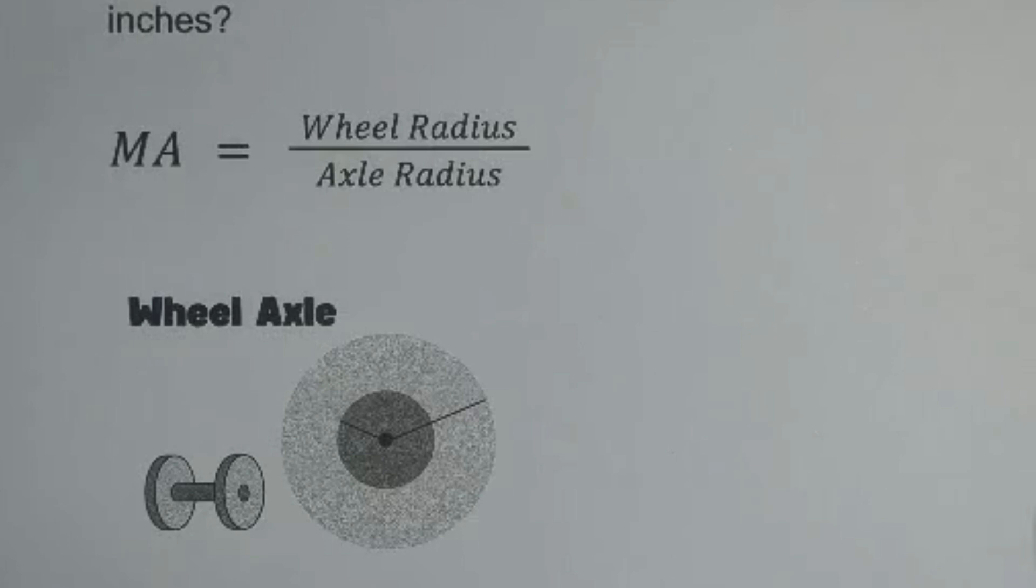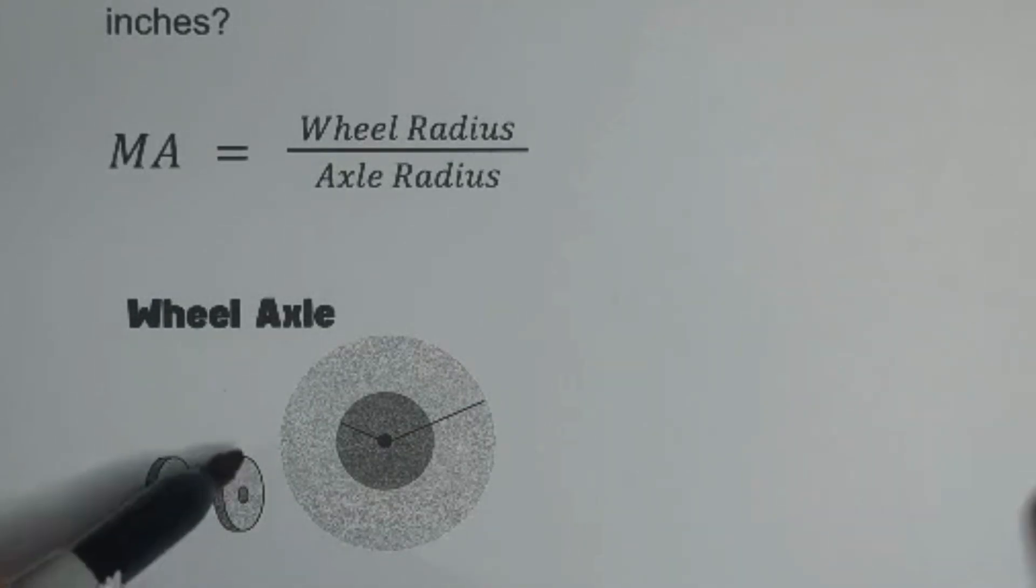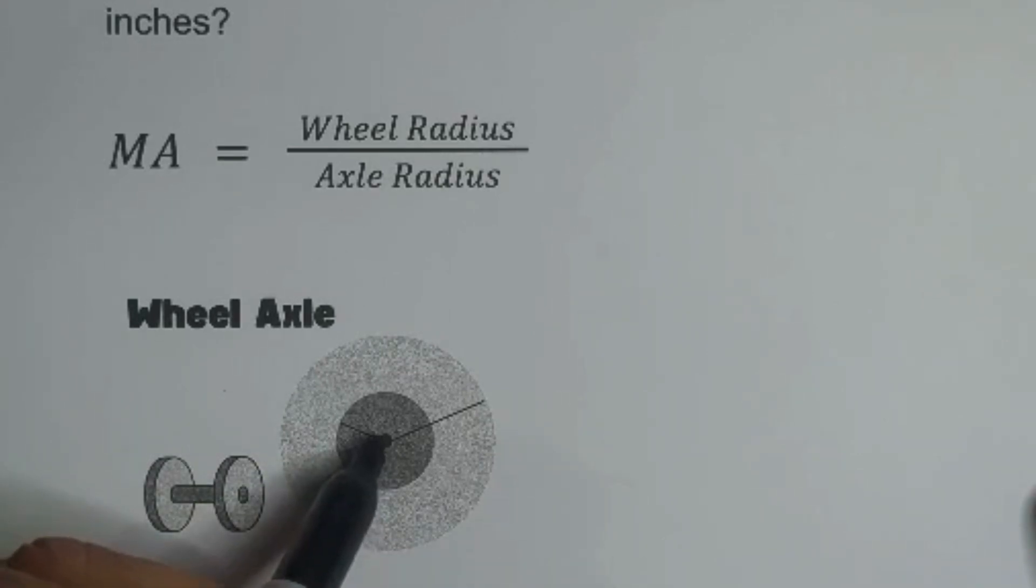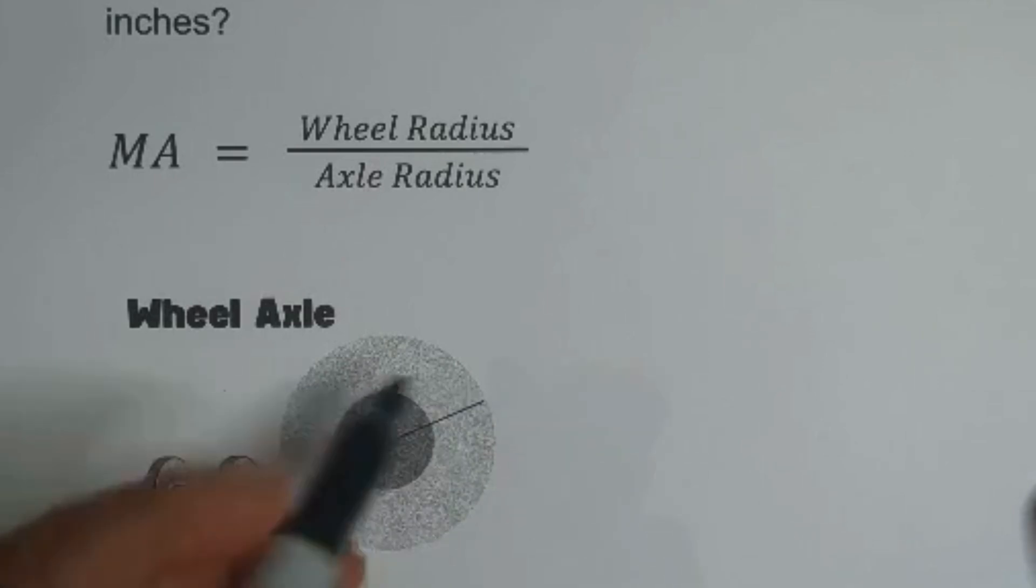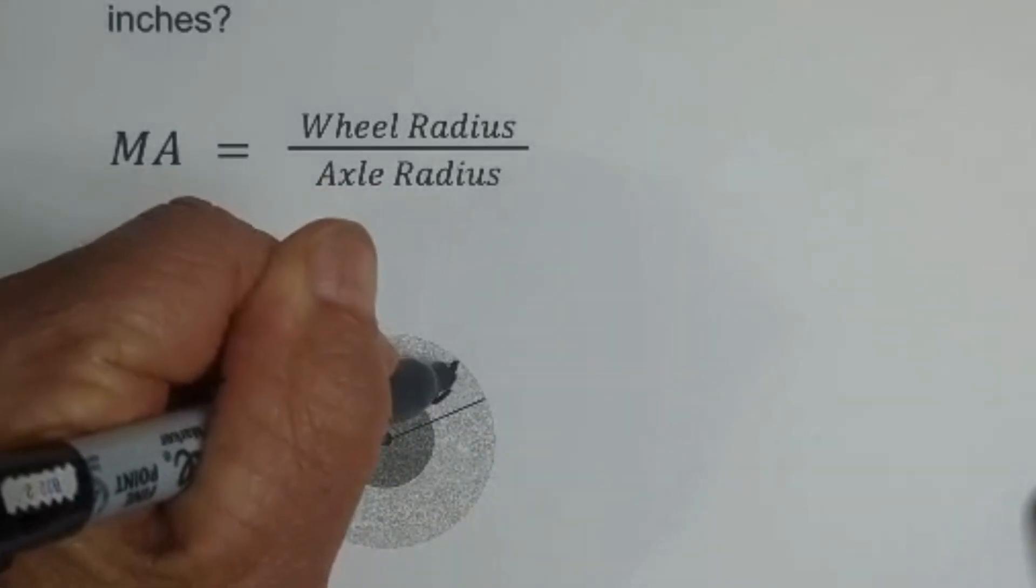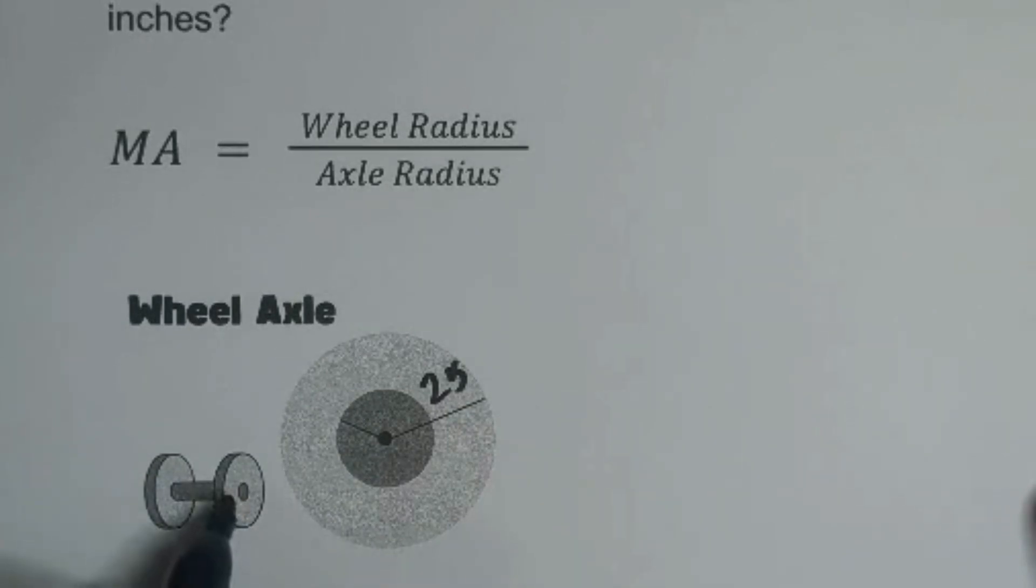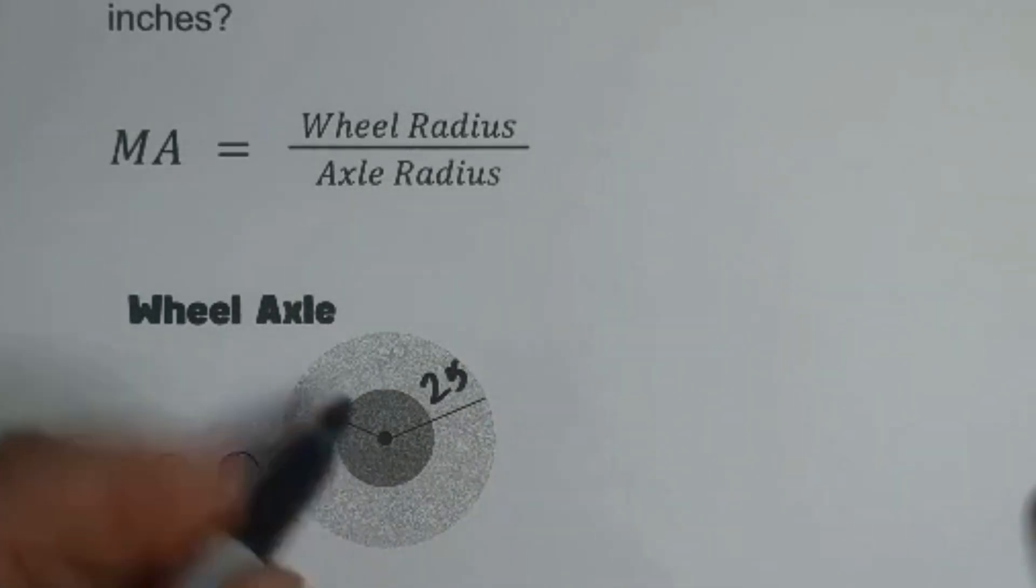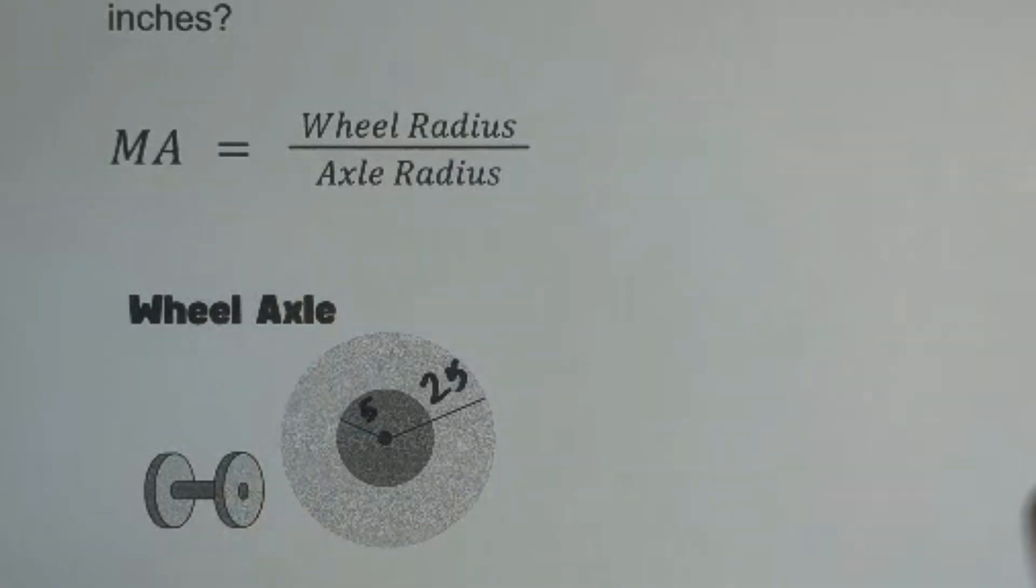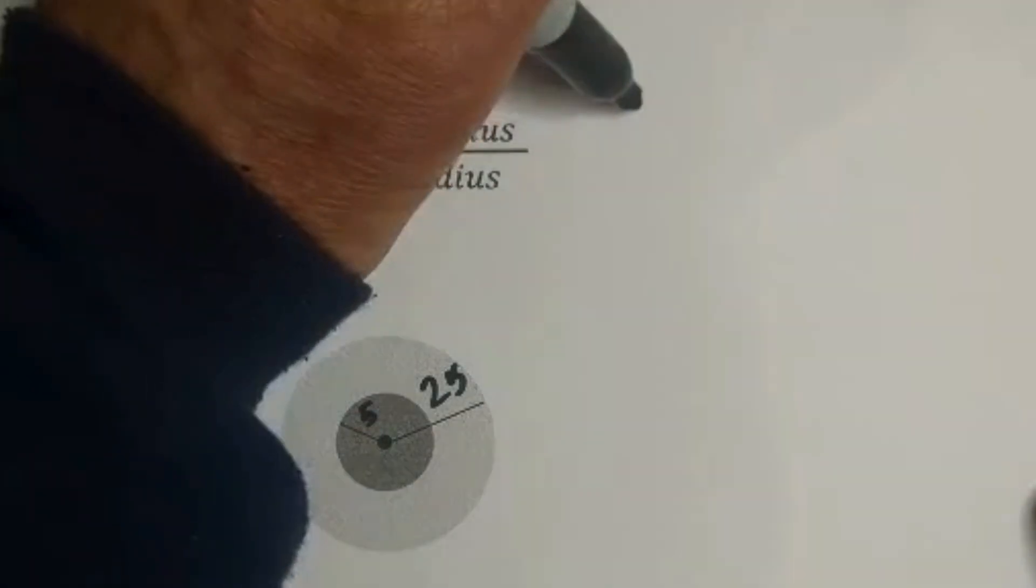And here's what I'm talking about. Here would be a wheel and axle. The gray is the wheel. The dark is the axle. So the radius of the wheel is from the center out and it's 25 inches. The dark section is the axle, like right here, and it is 5 inches. So we're just going to plug this into the formula.